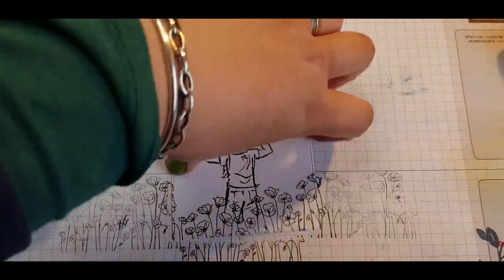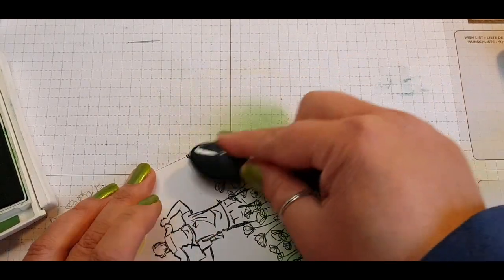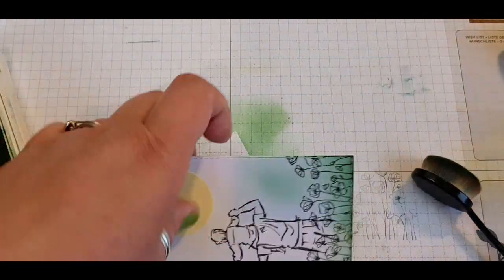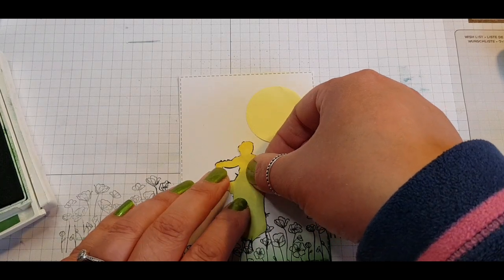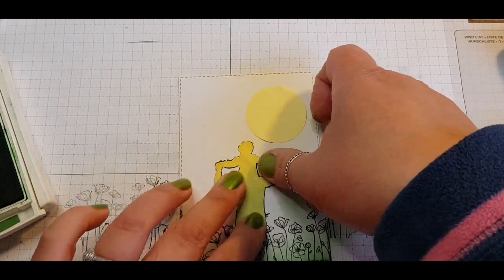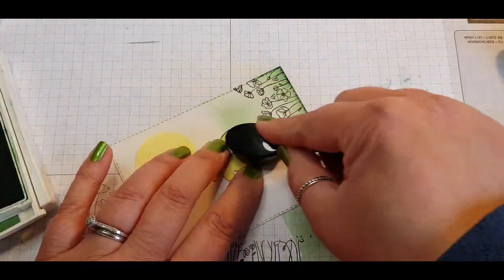Starting off with garden green and just laying down some color into the field with my blending brush and I've gone ahead and cut out the man so I've got him masked off already. So just laying down that post-it note on that image to avoid coloring him in green.